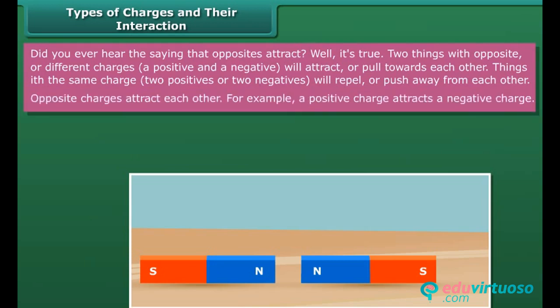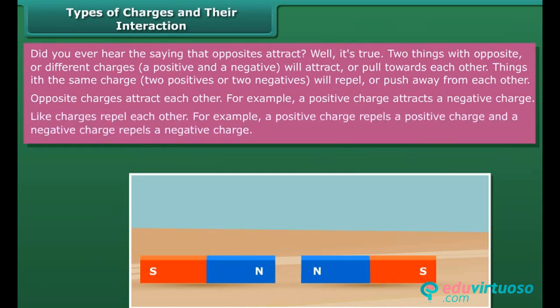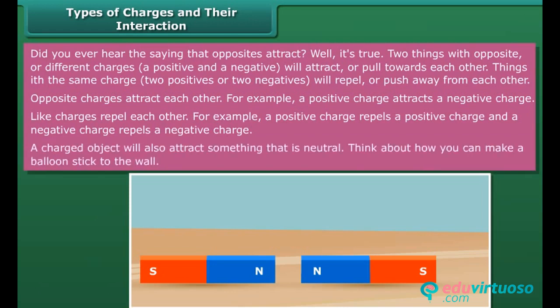Opposite charges attract each other — for example, a positive charge attracts a negative charge. Like charges repel each other — a positive charge repels a positive charge, and a negative charge repels a negative charge. A charged object will also attract something that is neutral.